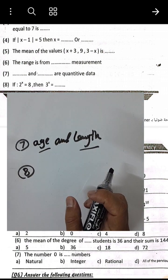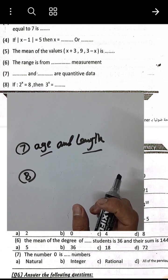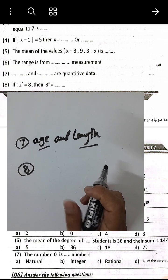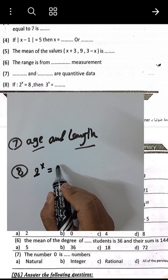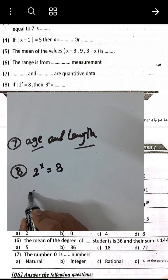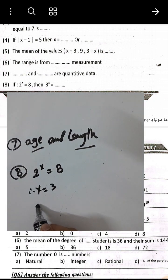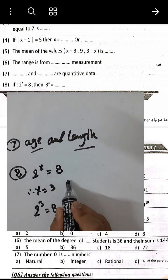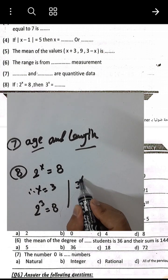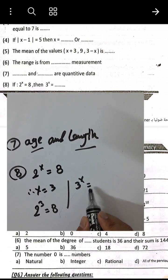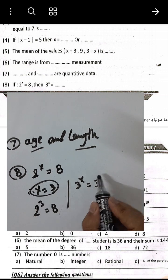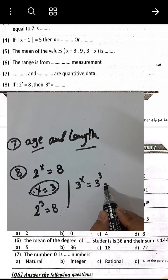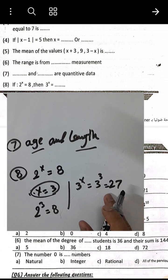If 2 to the power x equals 8, then x equals 3 because 2 cubed equals 8. Now find 3 to the power x: 3 to the power 3 equals 27. The result is 27.